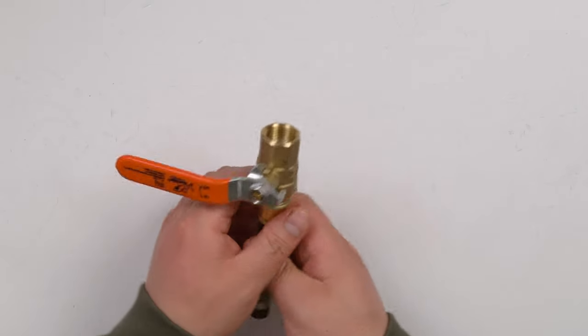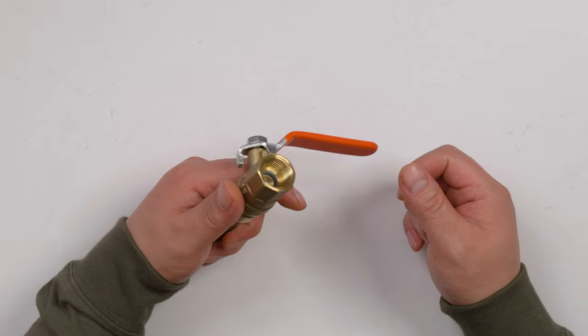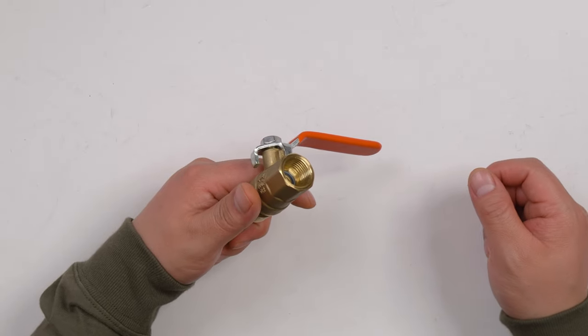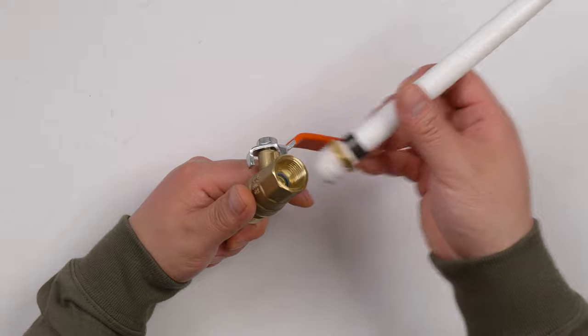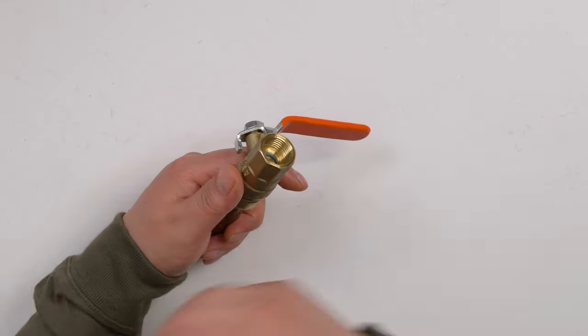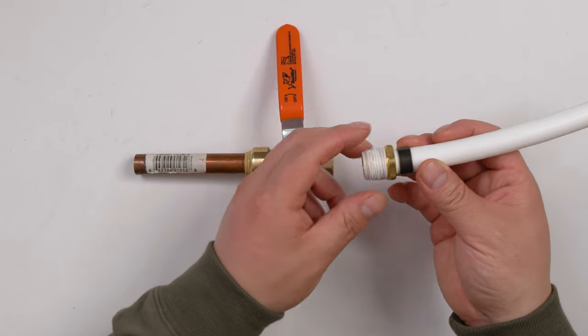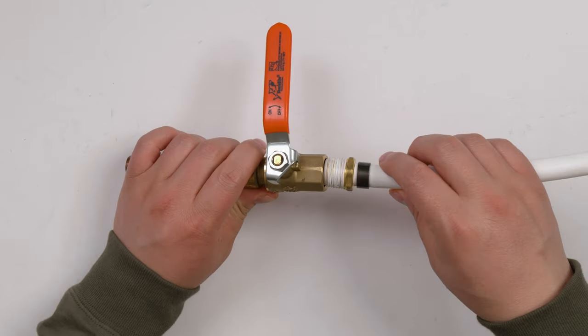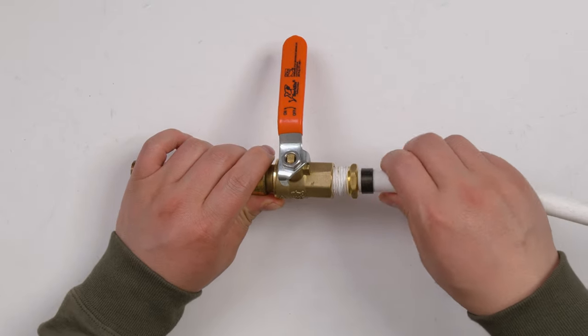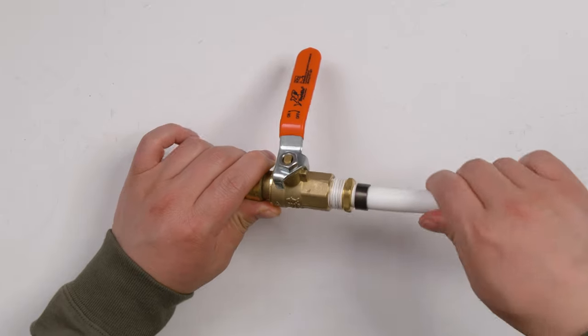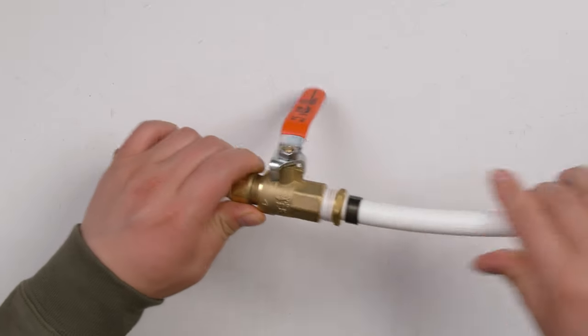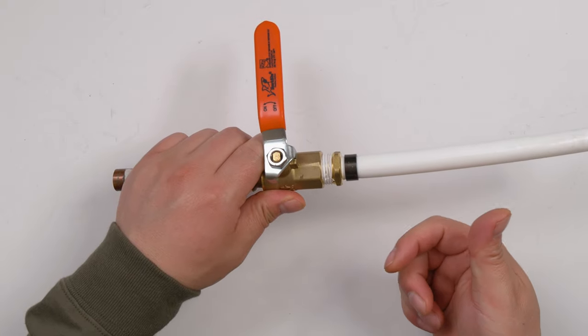Let's check the other side. The other side is the female connector. We are using either PEX or you can use copper. Don't forget, you need to put the tape on the thread. This is pretty simple—just turn. And then when you get to the end, you're going to use a wrench to make it tight.